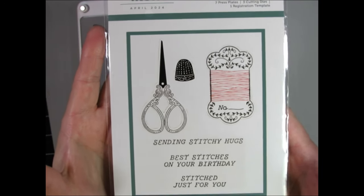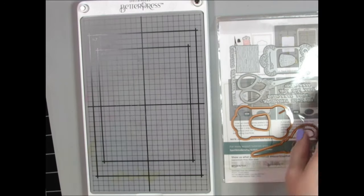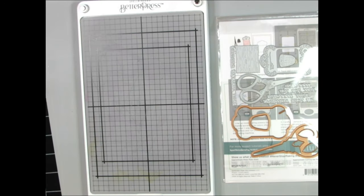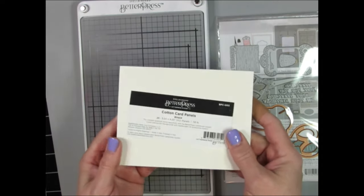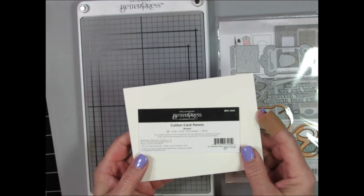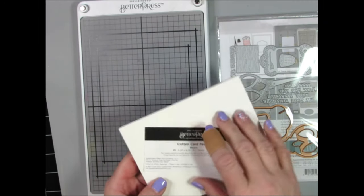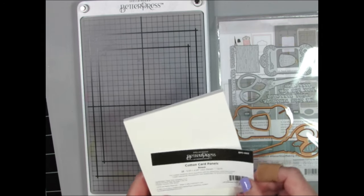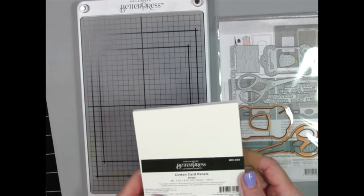So I did that off camera, but I am going to show you how to use this registration template. Here's the packaging a little bit closer on the camera so that you have an idea of what the sentiments look like. I'm using the Spellbinders Better Press Bisque Cotton card panels.